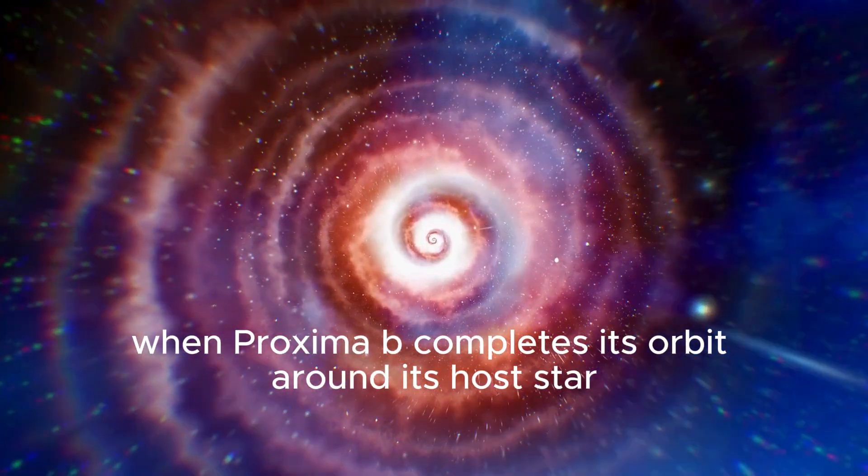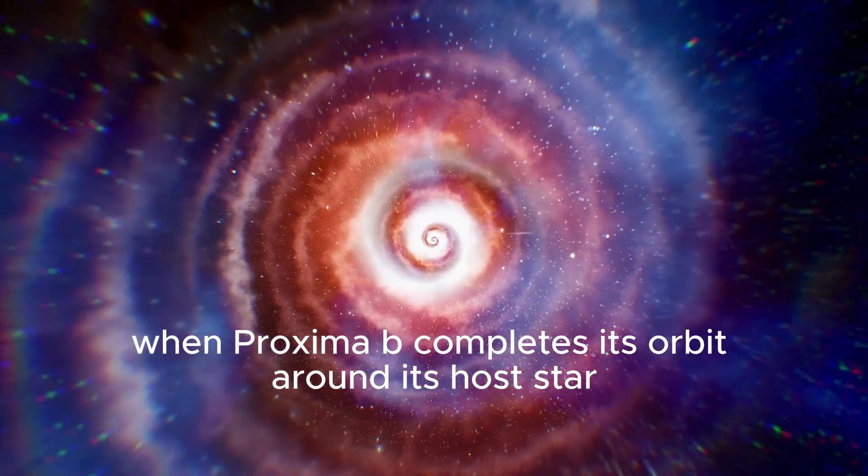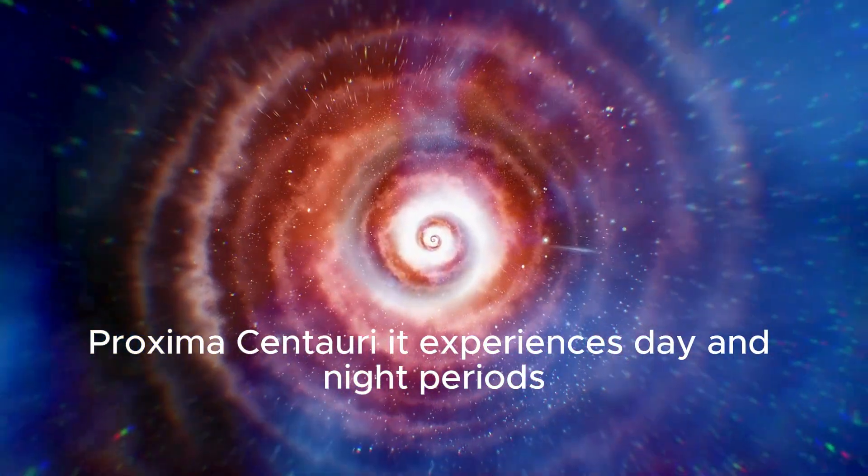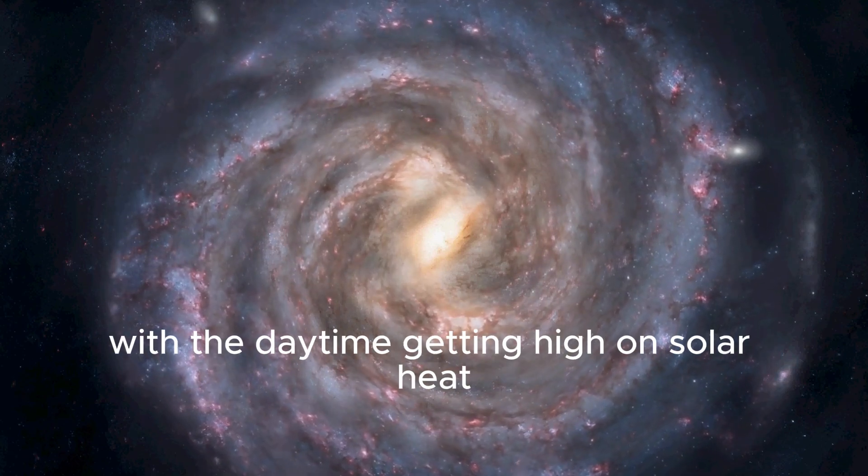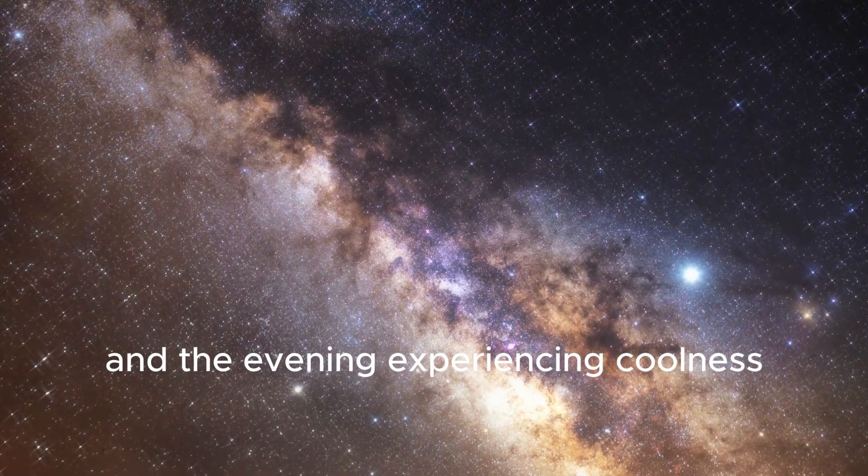At the same time, when Proxima b completes its orbit around its host star Proxima Centauri, it experiences day and night periods just like what we have on Earth, with the daytime getting high on solar heat and the evening experiencing coolness.